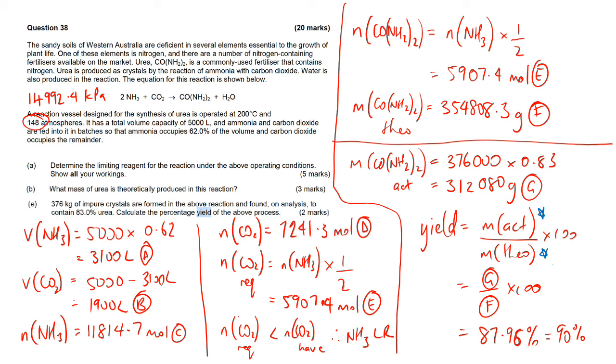How many significant figures should you give this answer to? One if you really had to because those two values are to one significant figure. If you were asked to give it to the correct significant figures you could just say it was 90 percent even though it is 87.96. So that is that question there.